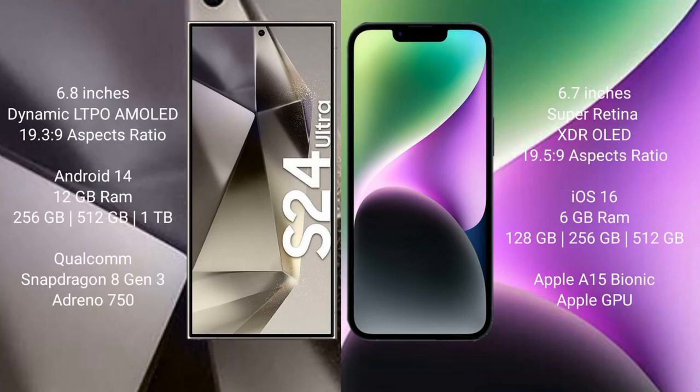The S24 Ultra comes with a 6.8-inch dynamic LTPO AMOLED display and aspect ratio 19.3:9. The iPhone 14 Plus comes with a 6.7-inch Super Retina XDR OLED display and aspect ratio 19.5:9. The Samsung Galaxy S24 Ultra runs on Android 14, while the iPhone 14 Plus runs on iOS 16.